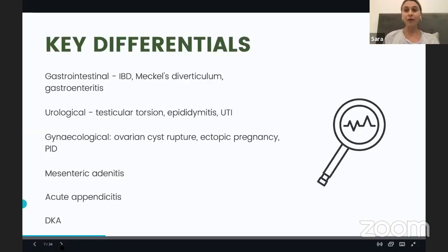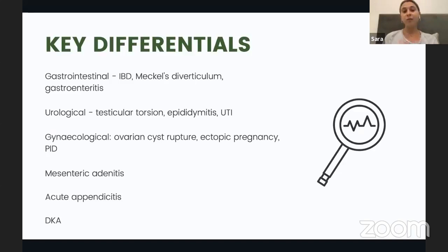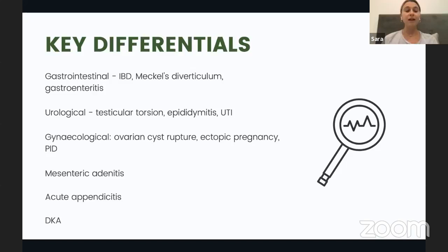You have identified the differentials very correctly. One way of grouping them is by anatomical systems. Gastrointestinal causes include inflammatory bowel disease, Meckel's diverticulum, and gastroenteritis. Urological causes include testicular torsion, epididymitis, or UTI. Gynecological pathologies include ovarian cysts, ectopic pregnancy, or pelvic inflammatory disease. This is why it's very important that for all females, we must do a pregnancy test. Another cause is mesenteric adenitis, usually seen in children, preceded by sore throat, and managed conservatively.